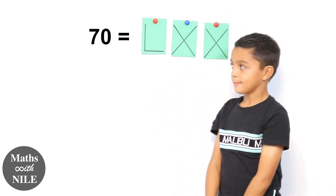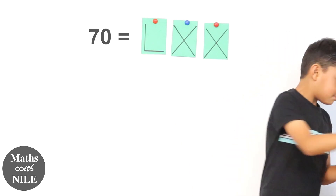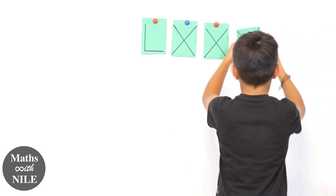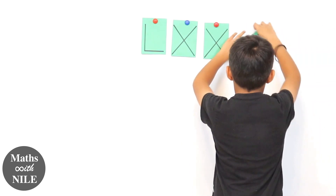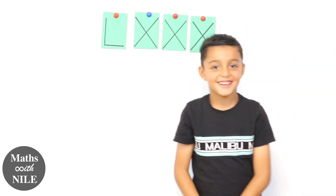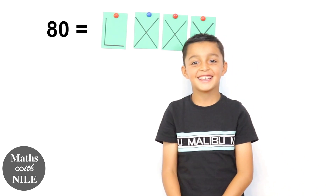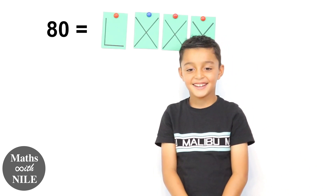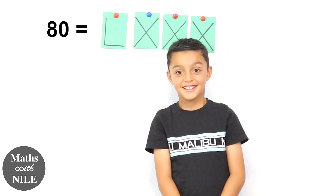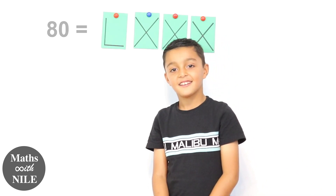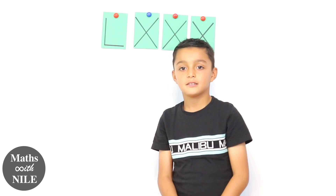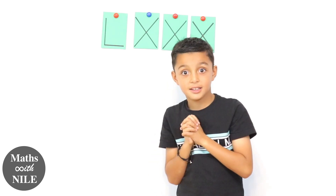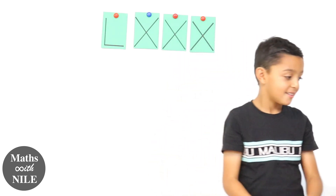70. Okay. 80. Okay so you got 80 there now Niall, what comes after 80 if we're counting up in tens? 90.